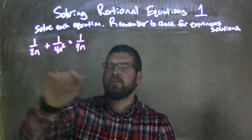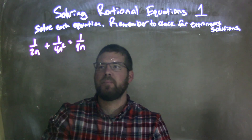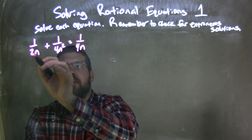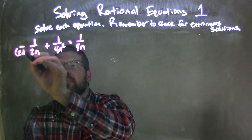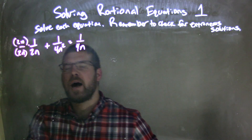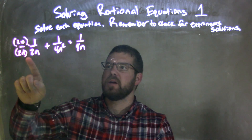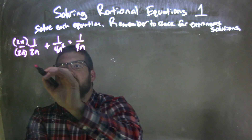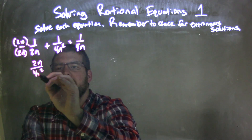I want to combine these two together, but when I combine them I need to have the same base. To get the same base — to have a 4n squared — I have to multiply by 2n. And I have to multiply both the numerator and the denominator, because 2n over 2n is just 1, it doesn't change it, but 2n times 2n is 4n squared. So now I have 2n over 4n squared.